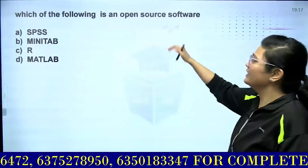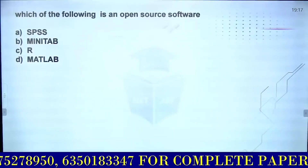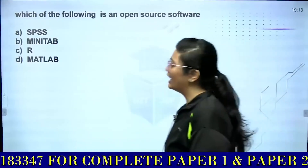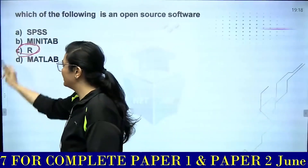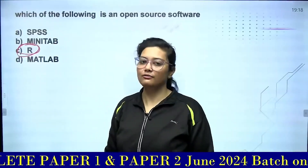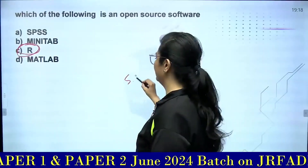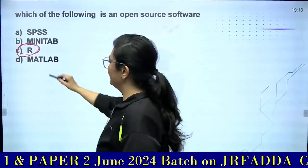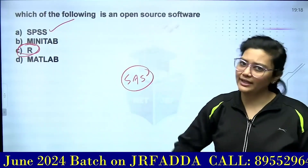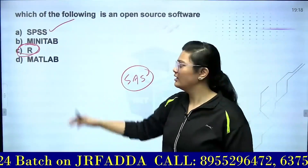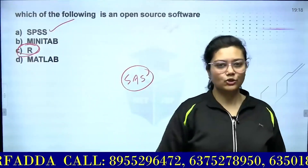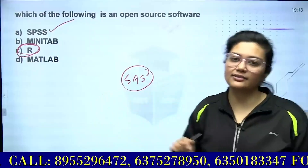Here, the question asked is: which is open source? There are SPSS, Minitab, R, and MATLAB. Now, we have talked about R, which is the most famous statistical tool, data analytics tool — R software. Who has replaced R? SPSS has replaced R. SPSS stands for Statistical Package for Social Sciences. Minitab and MATLAB are also software used for analyzing data in research.